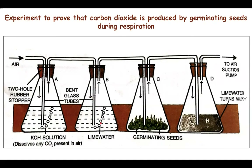In flask B, the lime water does not turn milky because there is no carbon dioxide in the incoming air. This carbon dioxide-free air is then made to pass into flask C containing germinating seeds. The germinating seeds use oxygen and perform respiration, producing a large amount of carbon dioxide. This carbon dioxide-rich air passes into flask D, where it turns the lime water milky, clearly indicating that the germinating seeds produced the carbon dioxide. So this experiment proves that carbon dioxide is produced by germinating seeds during respiration.